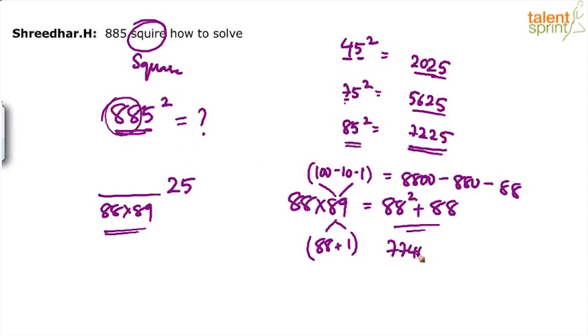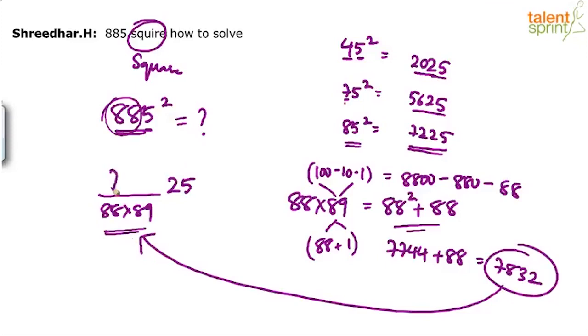7,744 plus 88. So 7,740 plus 80 will be 7,820 plus 12. 7,832. This number comes here.